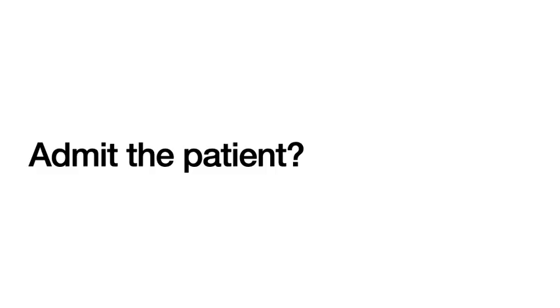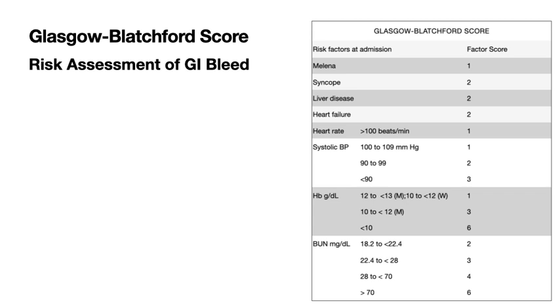With this story, you ask yourself: could you discharge the patient or should you admit the patient? How do you go about it? You could use a Glasgow Blatchford score. This was developed in Scotland and is a risk assessment score for patients presenting with upper GI bleed, applied on admission. You can go to a smartphone or computer, look for a Glasgow Blatchford score calculator, and plug in the variables.